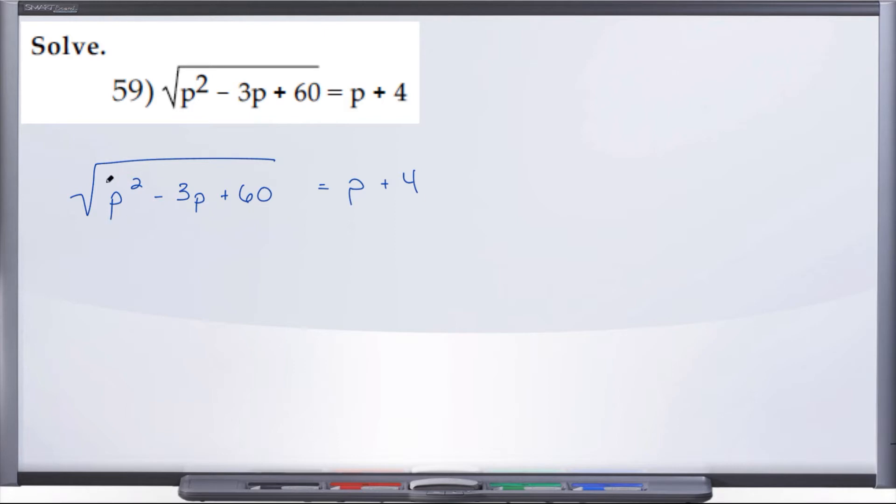Here on the left side, p is trapped under this radical. So the first thing we want to do is square both sides to get rid of this radical. We'll square the left, square the right, and on the left, when we square, the radical goes away and we're left with whatever was originally under the radical sign.